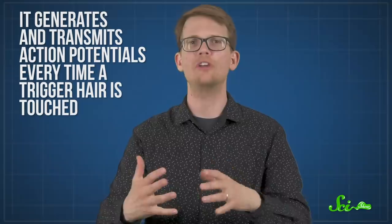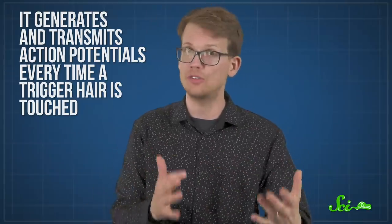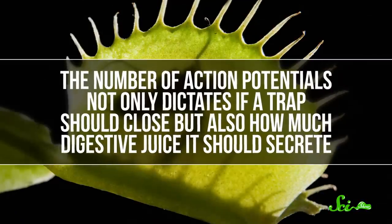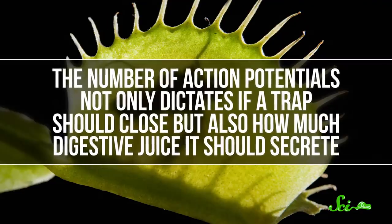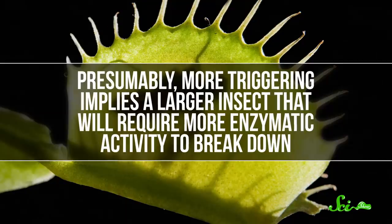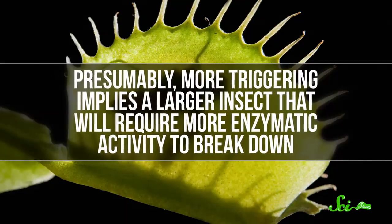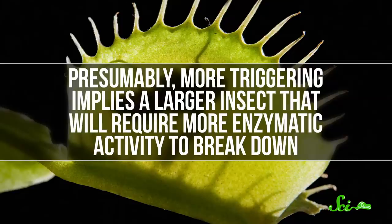It generates and transmits action potentials every time a trigger hair is touched. The number of action potentials not only dictates if a trap should close, but also how much digestive juice it should secrete. Presumably, more triggering implies a larger insect that will require more enzymatic activity to break down. Basically, having a measure of the size of their meal lets them meter their investment in it so they don't waste energy.